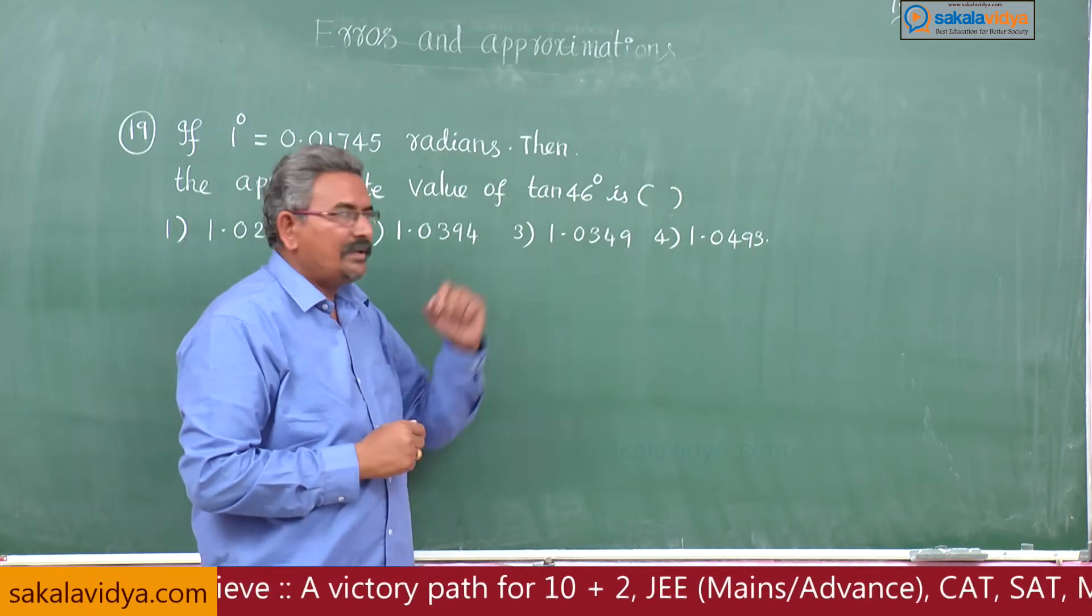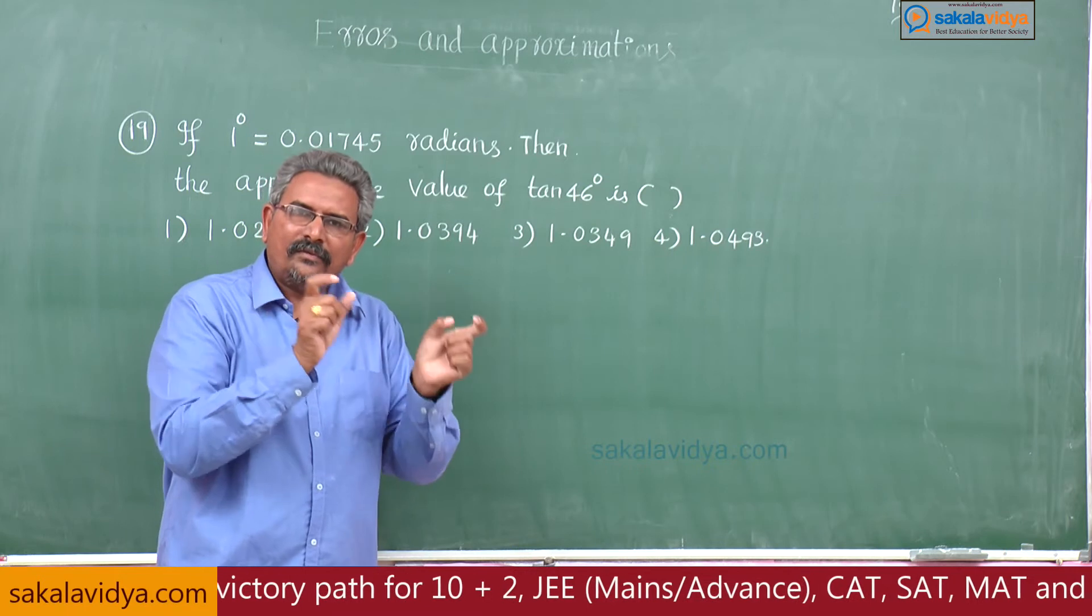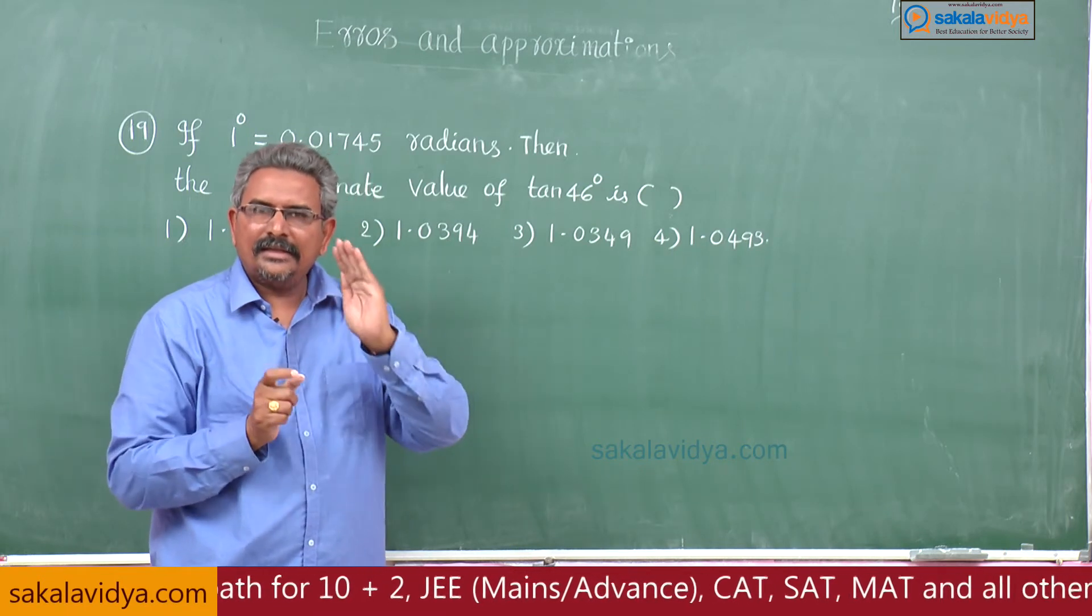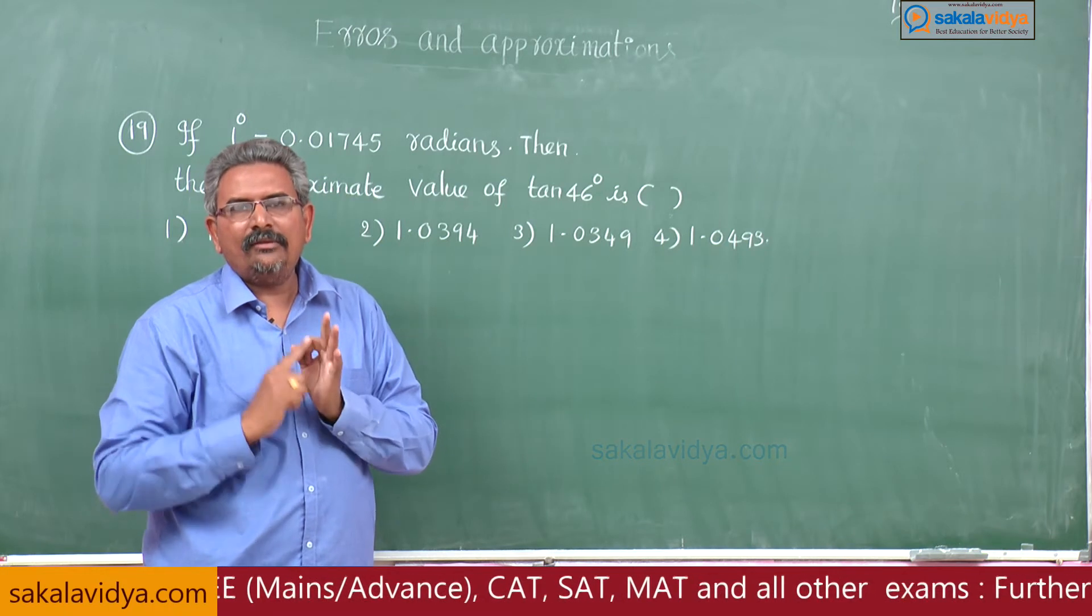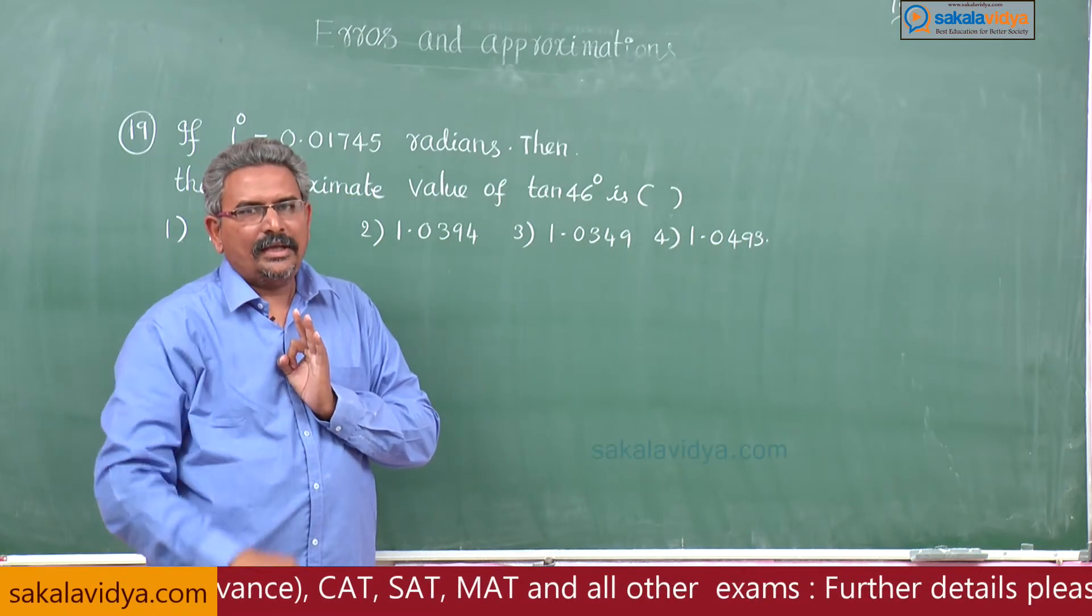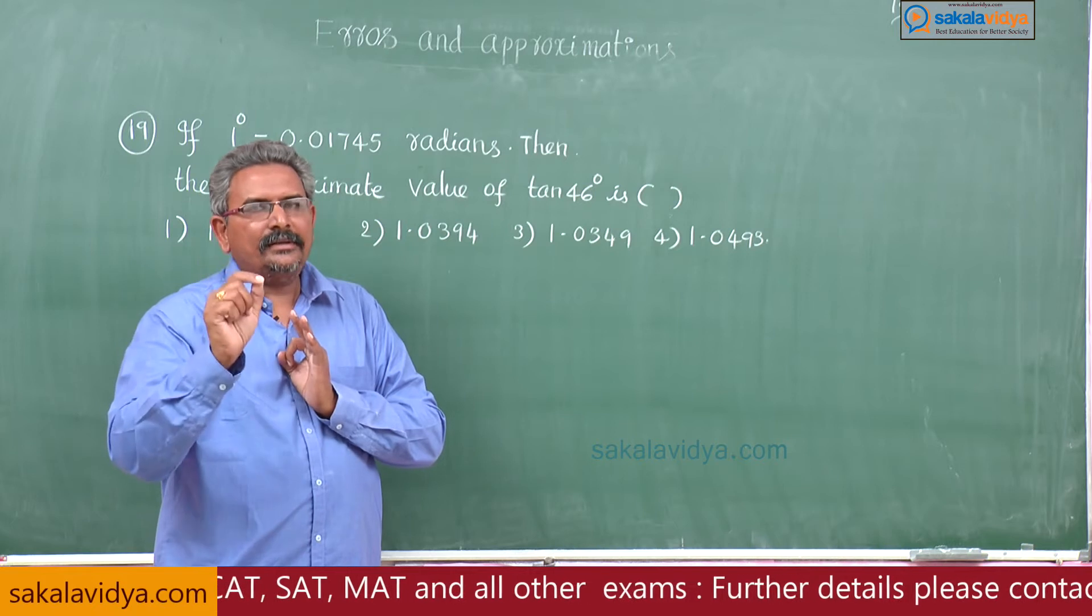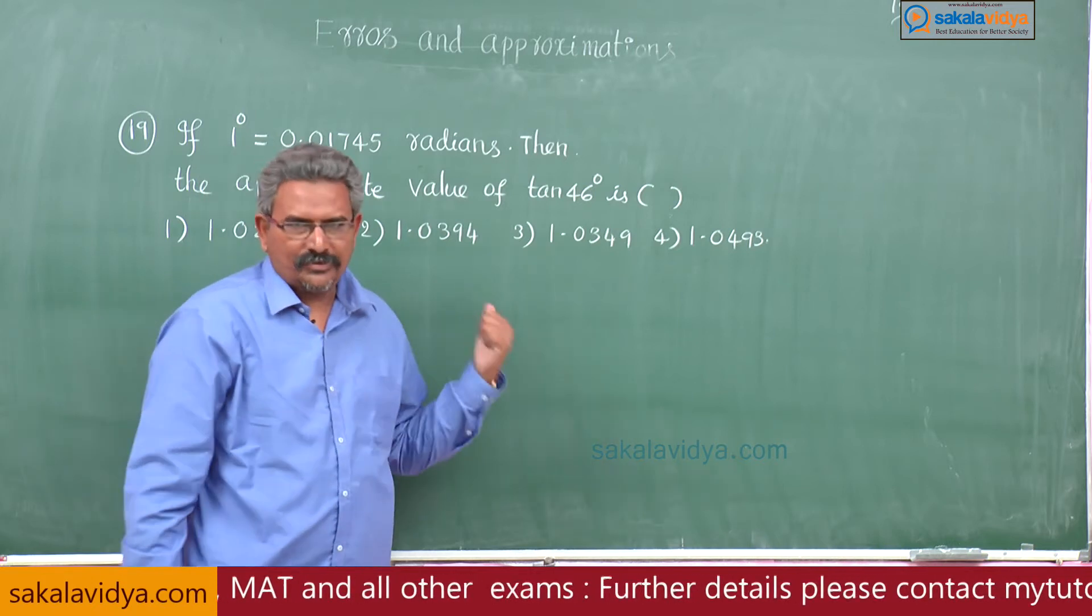46 degrees means that we can write 45 degrees plus 1 degree, where x is 45 and delta x is 1 degree. 1 degree we have to express in radians. I hope you might have understood this problem. Let us proceed.